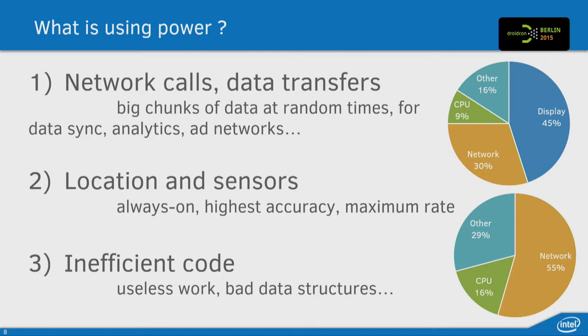CPU is less important but still matters. To optimize on the CPU side, your code has to be more efficient — do actual useful work, avoid copying and sorting the same data structures ten times. Even if your code is beautiful, that doesn't mean it will necessarily work well on the platform. That's quite a sad story. On Android, for example, you don't want a big object-oriented hierarchy with seven nested method calls — you need to keep things simple.